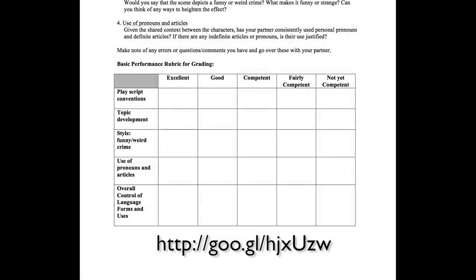Students do their peer editing work, and at the college level they really are able — once given those specific tasks — to go quite far in giving each other feedback. They pick up on a lot of things in their partner's writing. Then they do their rewrites, so what they ultimately submit to me is their best work. I only grade once, and I use the rubric — I take all of those peer editing tasks and convert them into a rubric. So I'm grading them on the same work they've been doing with their peers.